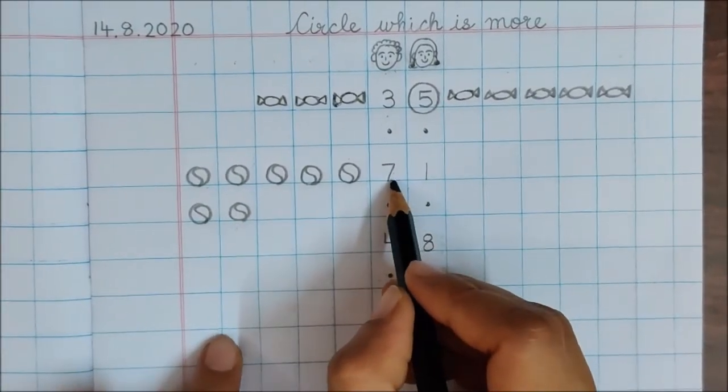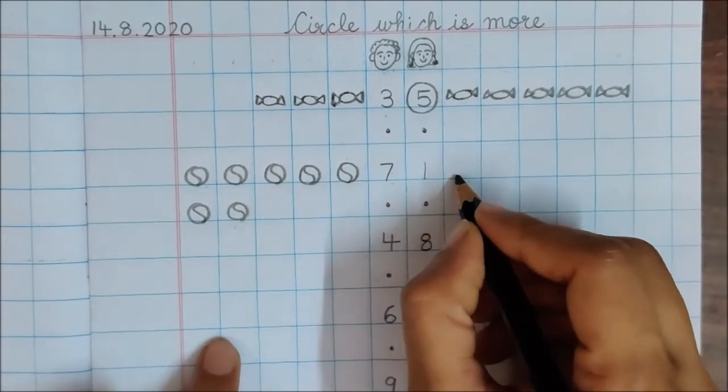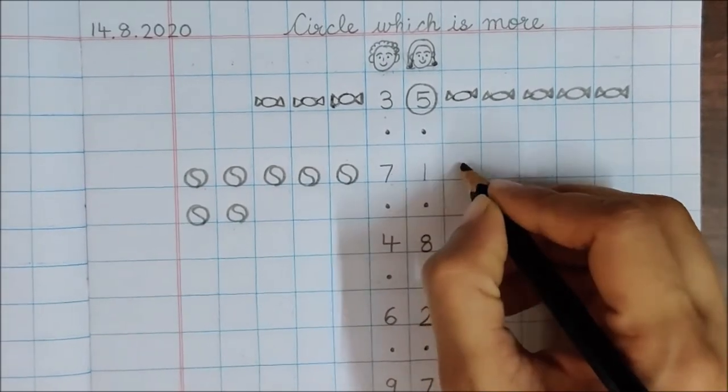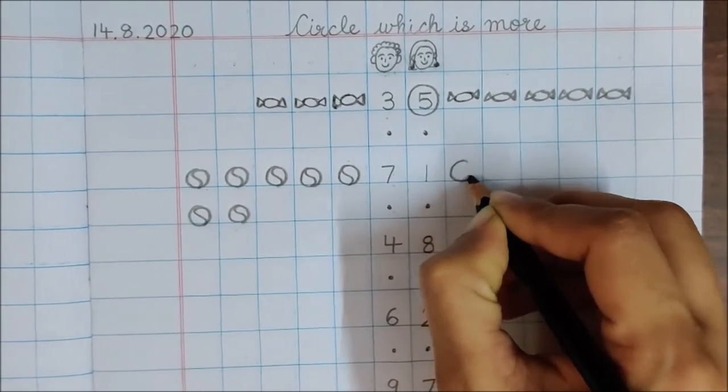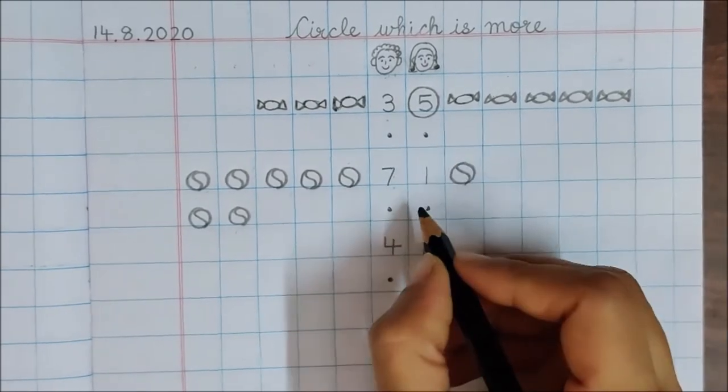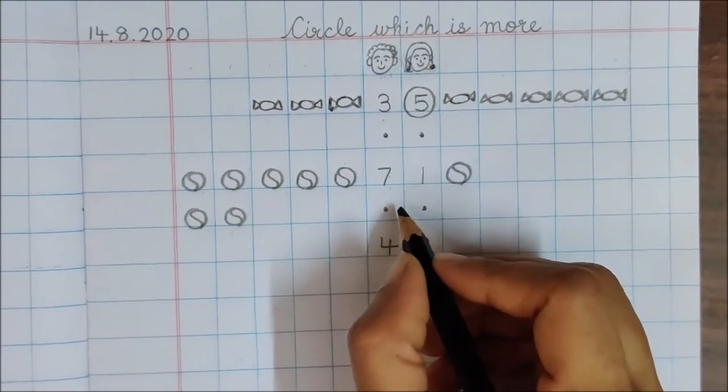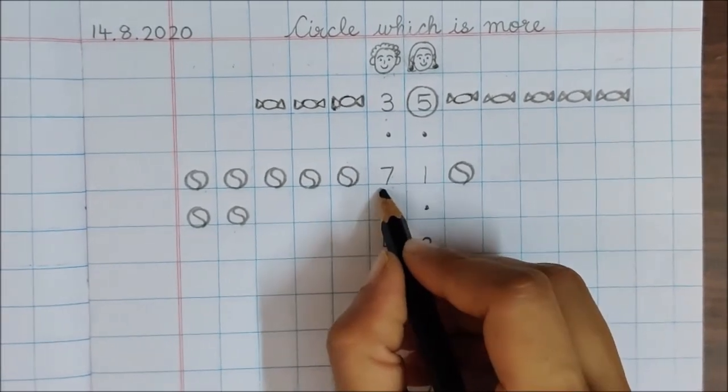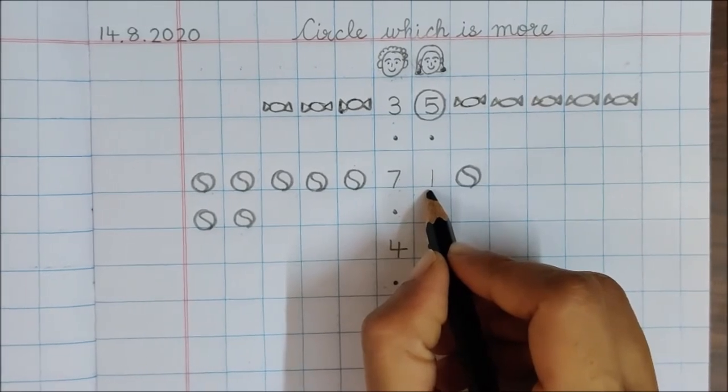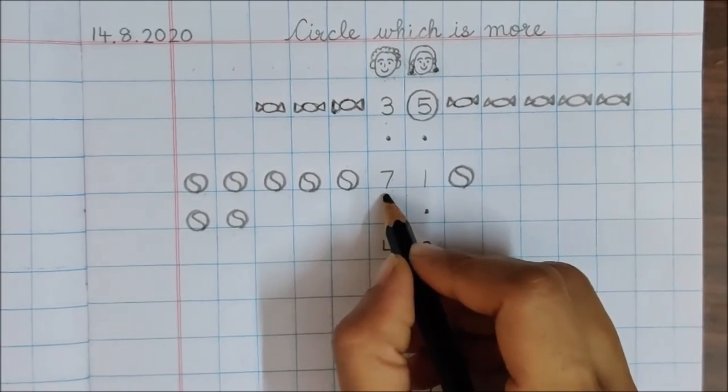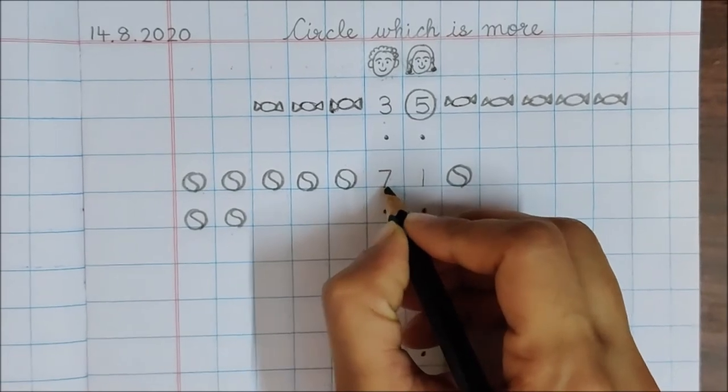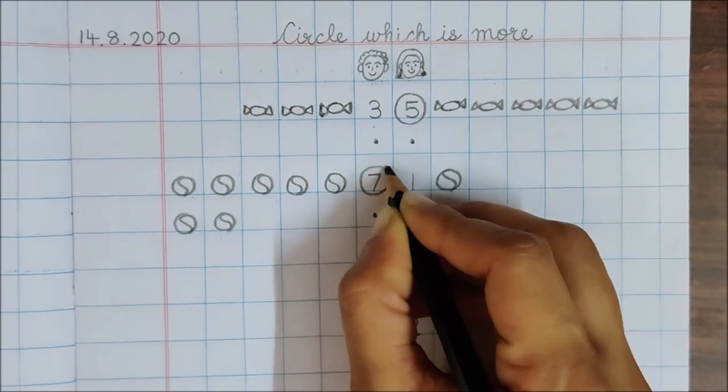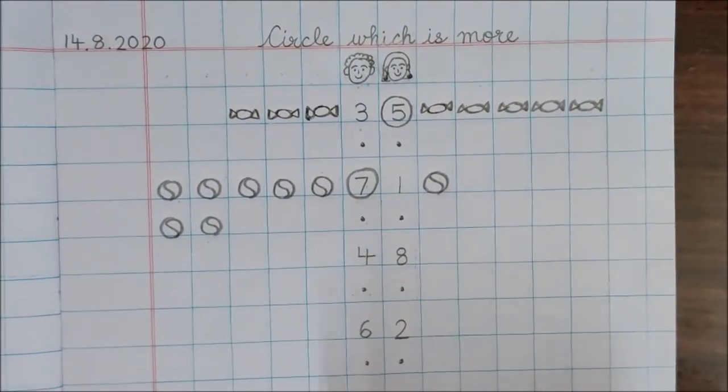So your papa got 7 balls for you. And your mama, she also went shopping for you. And she got 1 ball for you. Now tell me children, who got more balls for you from the market? 7 or 1? Which is more children? Yes, 7 is more. Papa got more balls for you. So circle number 7.